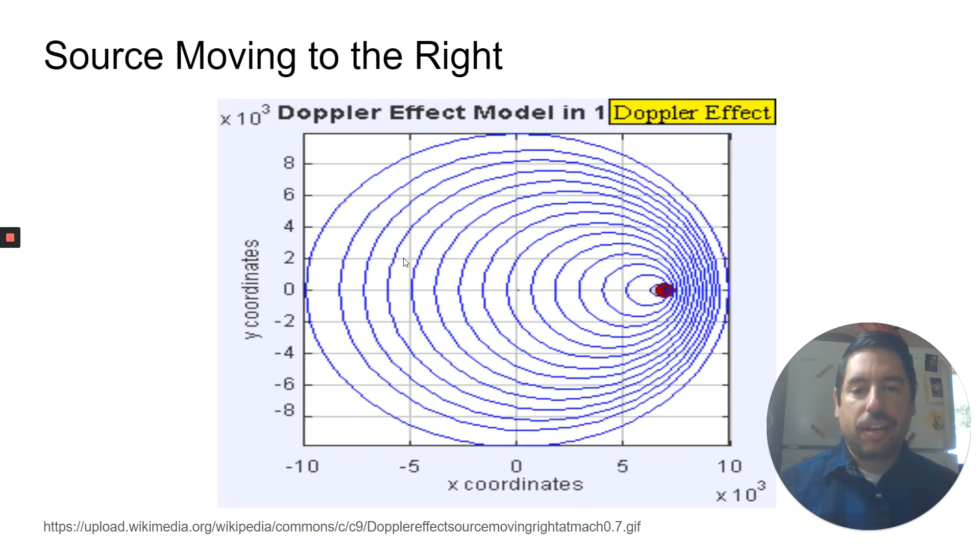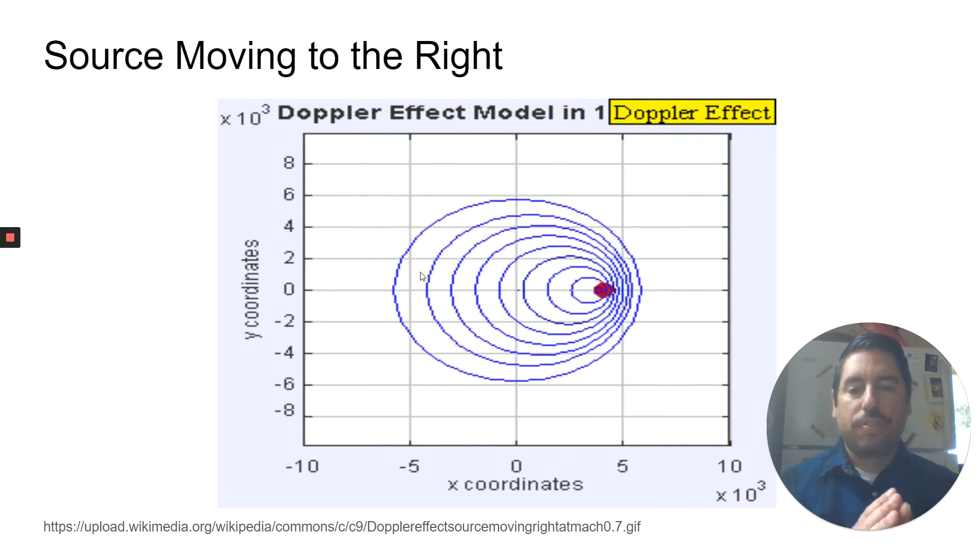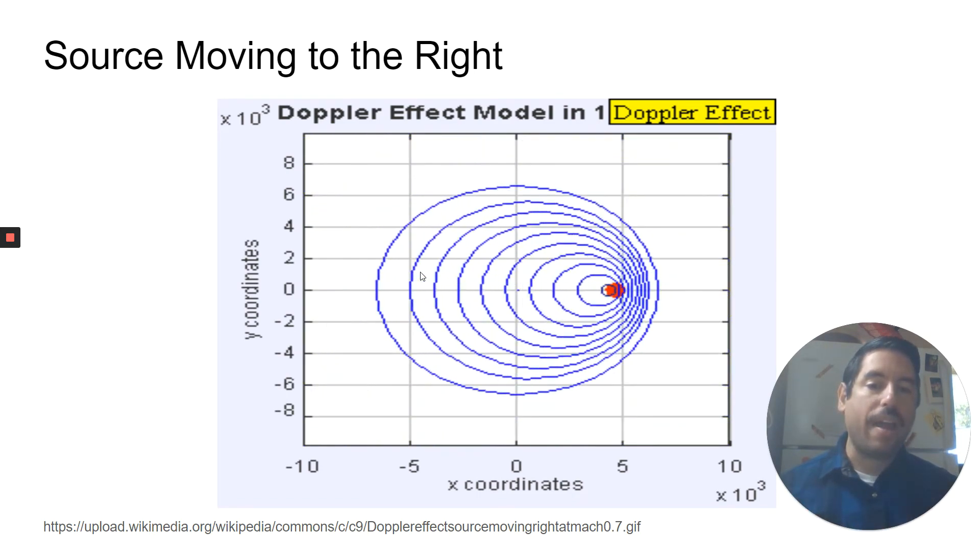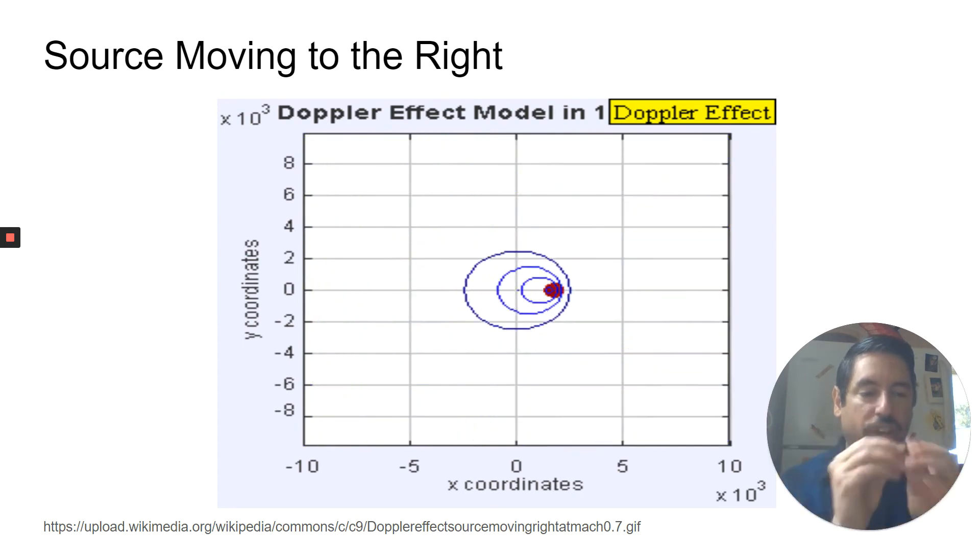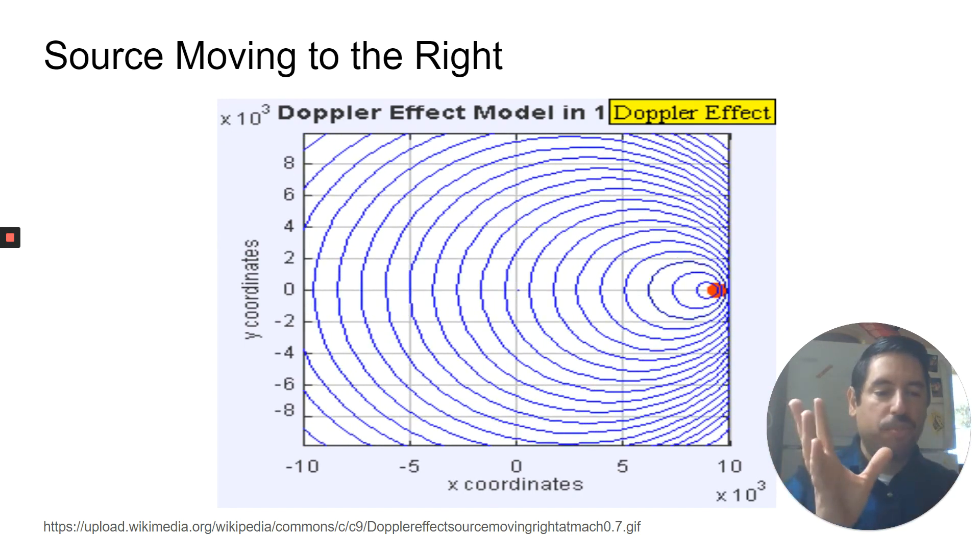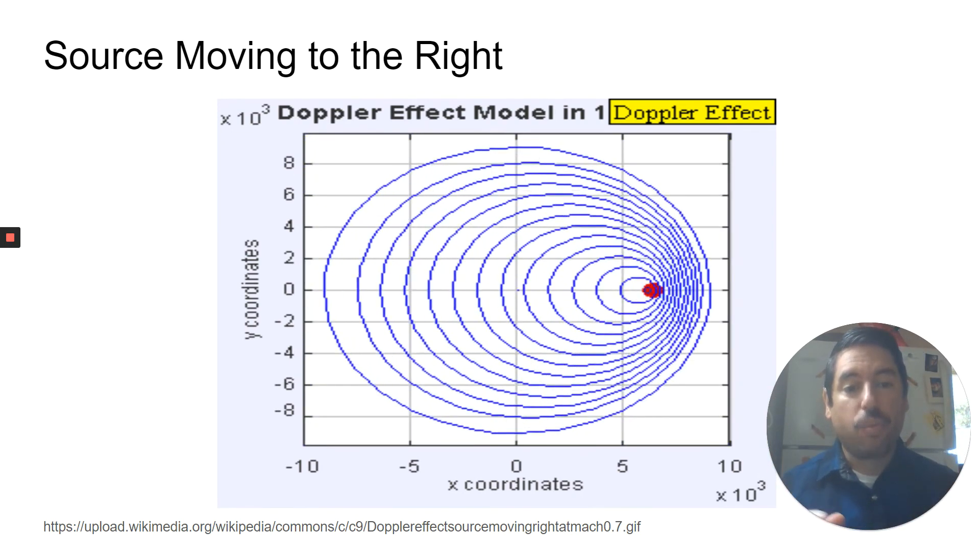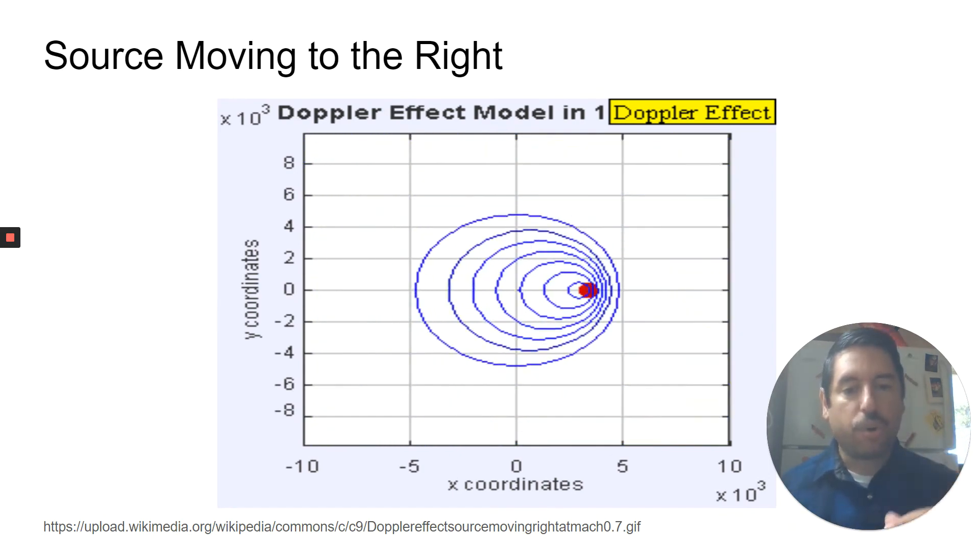The waves on the opposite side, on the left of the object, those waves are spreading out because the object is moving away from the waves it's sending. So it's constantly sending out these waves because it's moving while it's sending them out. The waves are either getting squished or they're getting spread out.